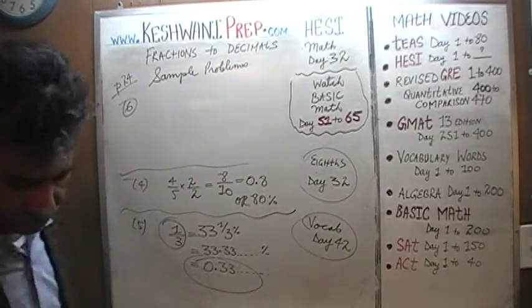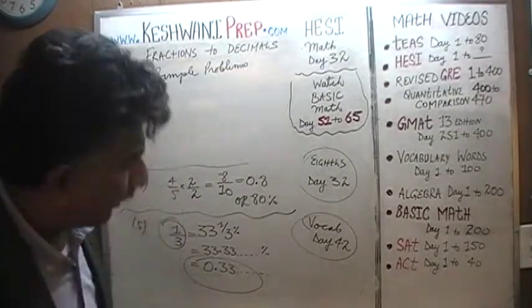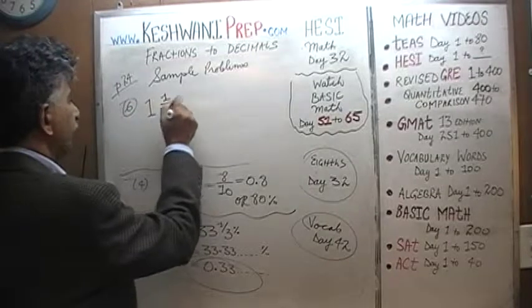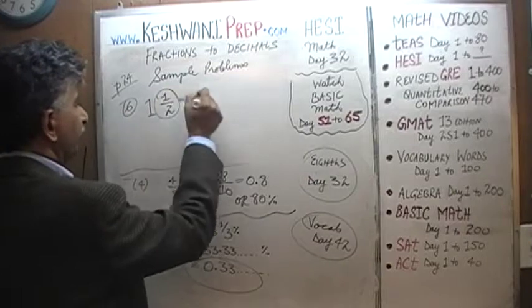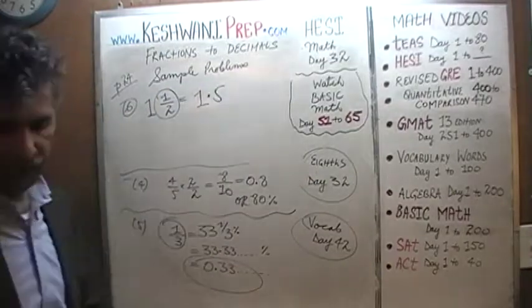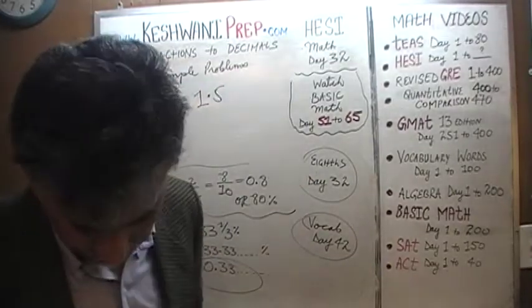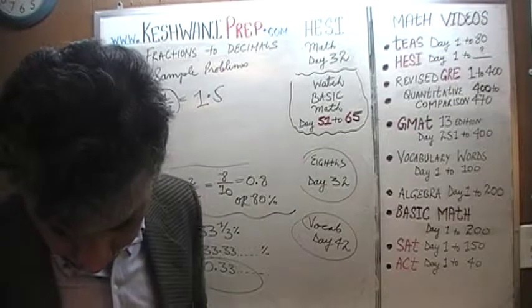Number six is one and a half. One and a half. This is too simple. One is just one and half, you know, is 0.5. Half of something is 0.5. One and a half is just 1.5. Let's do number seven.